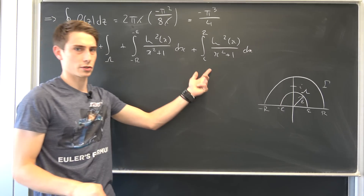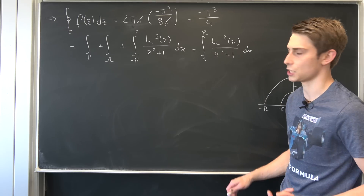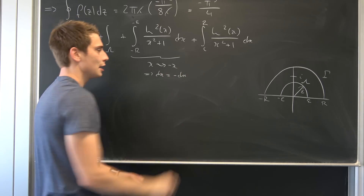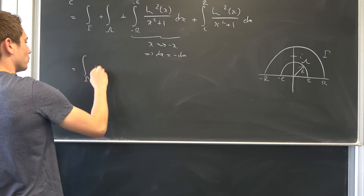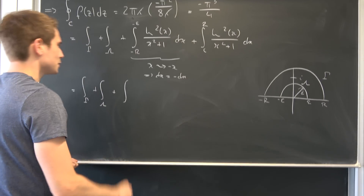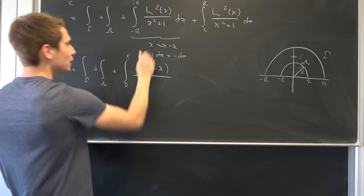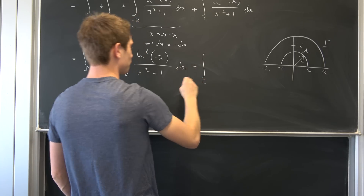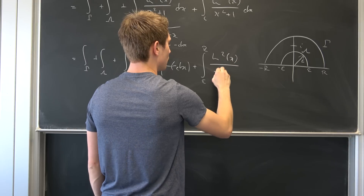We could bring those integrals together if the bounds matched. How can we change the upper and lower bounds? By introducing a substitution: let x go to negative x, so dx becomes negative dx. So now we have: gamma integral plus lambda integral plus an integral — after the substitution using negative values — from r to epsilon of natural log squared of (−x) over x² + 1, times negative dx.